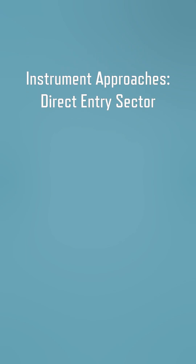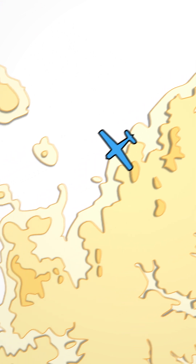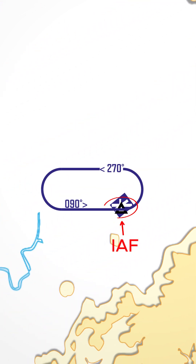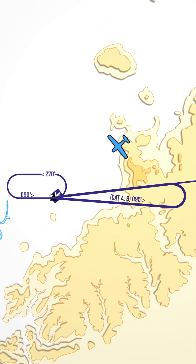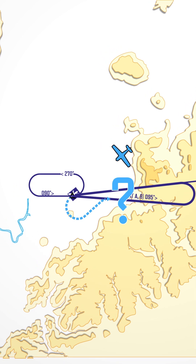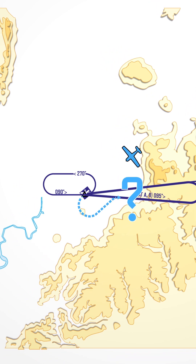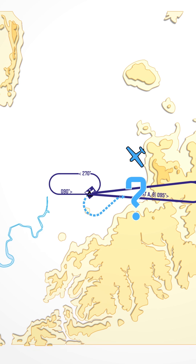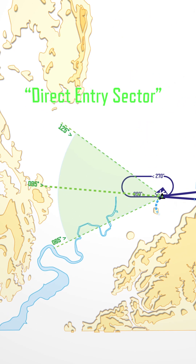Instrument approaches — the direct entry sector. Let's imagine you're flying towards an initial approach fix, and you're cleared for the procedure, no delay. Can you just turn directly outbound? Well, under ICAO PANS OPS, that depends on whether you're entering from the direct entry sector.